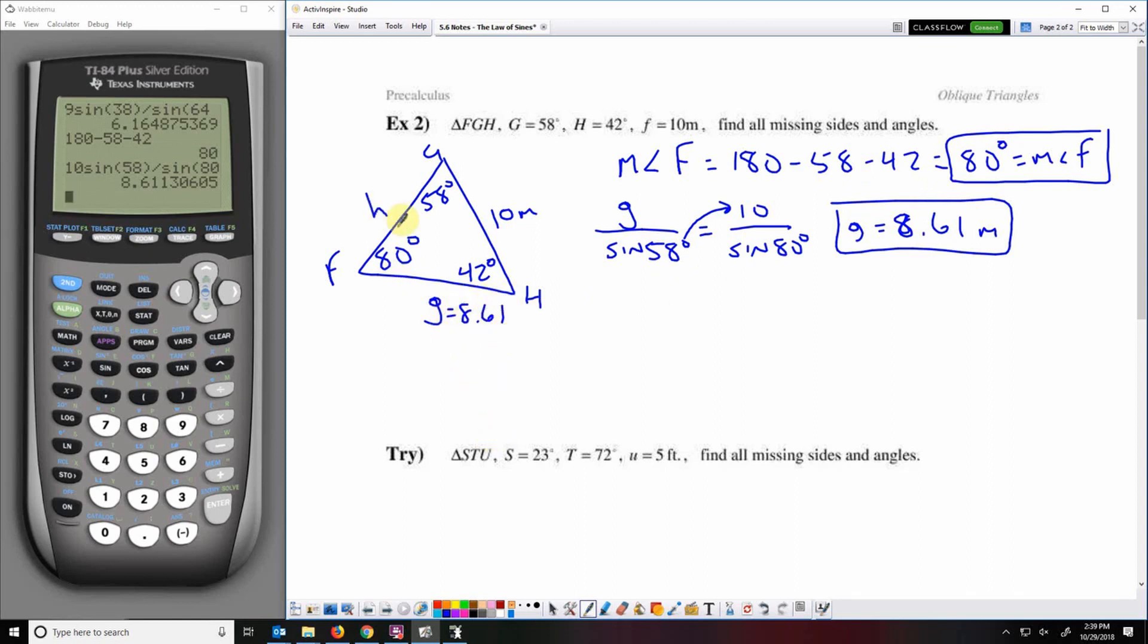Then I can do H over sine 42 equals 10 over sine 80. 10 times sine 42 divided by sine 80. 6.79.